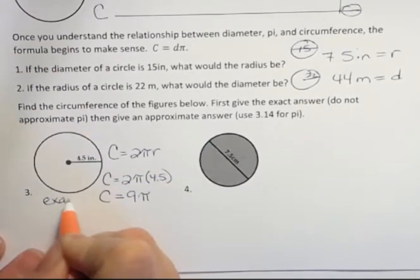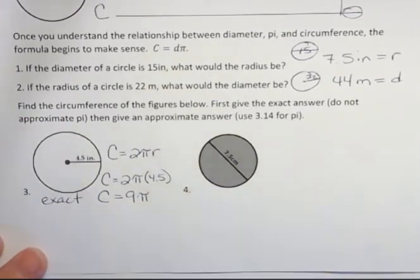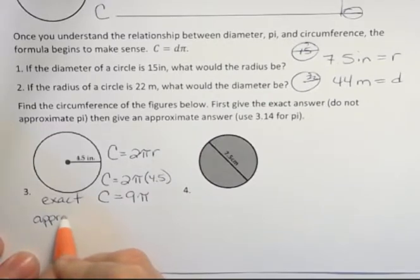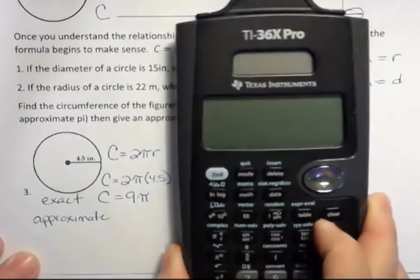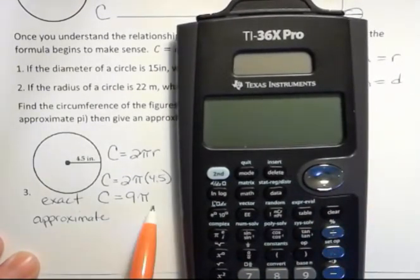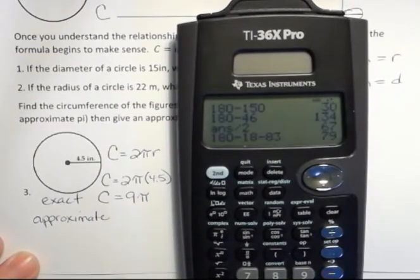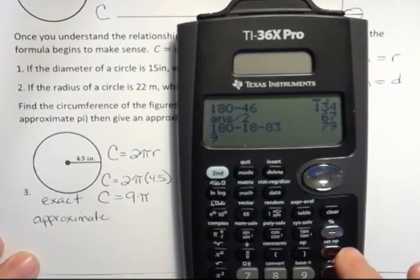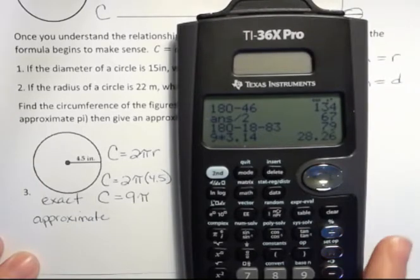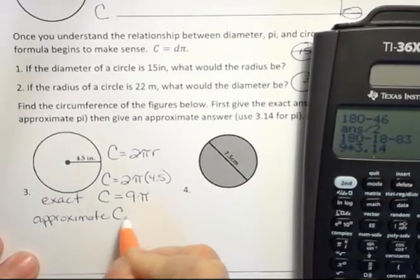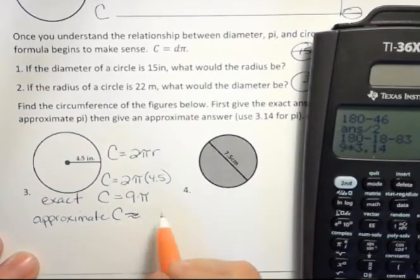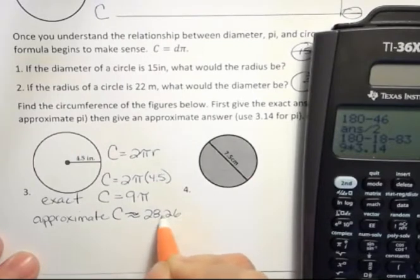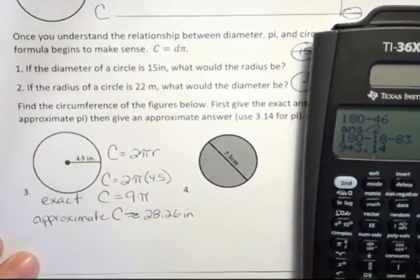This is exact because I haven't approximated pi. I've just said exactly. But then I can also approximate because if I want to do something else with it, then I kind of need an answer that I can work with more easily. Even though this is exact, it's not as easy to work with. So if I want to approximate it, then I'm going to say 9 times 3.14. And that's going to give me 28.26. So I could say the circumference is approximately, we use a little wavy lines then, 28.26. And that would be inches because it's just a distance around.